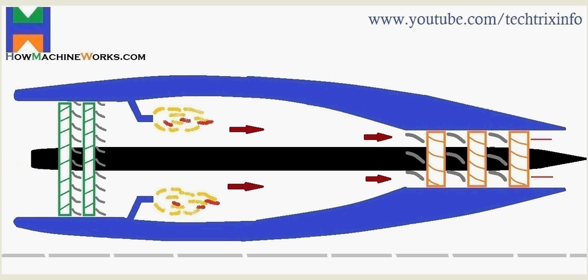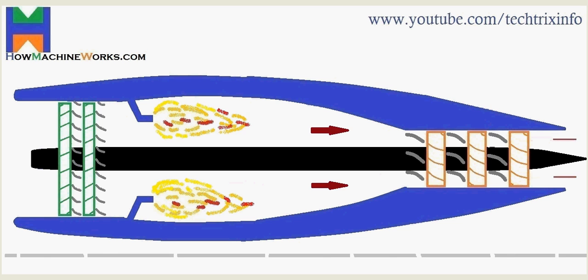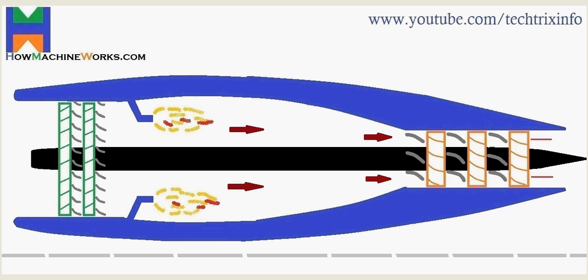And you can see there is a black shaft actually connected with the turbine and the compressor. So as the turbine rotates this turbine shaft the black shaft takes the drive from the turbine and gives it to the compressor blades so that it can rotate.